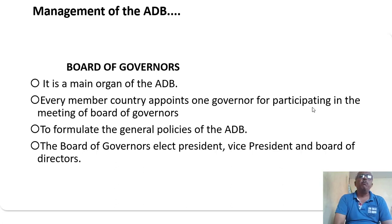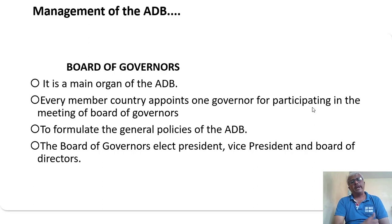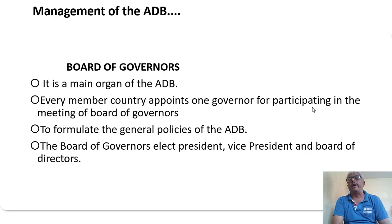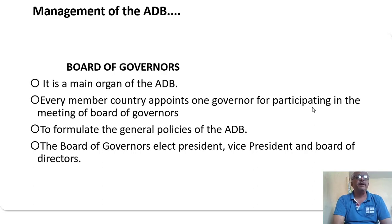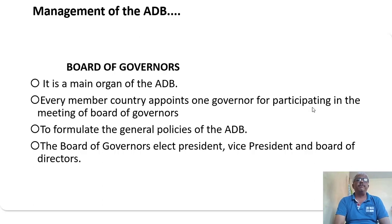The Board of Governors is the main organ of ADB. Every member country appoints one governor for participating in meetings of the Board of Governors. These governors formulate the general policies of ADB. The Board of Governors also elects the president, vice president, and board of directors.